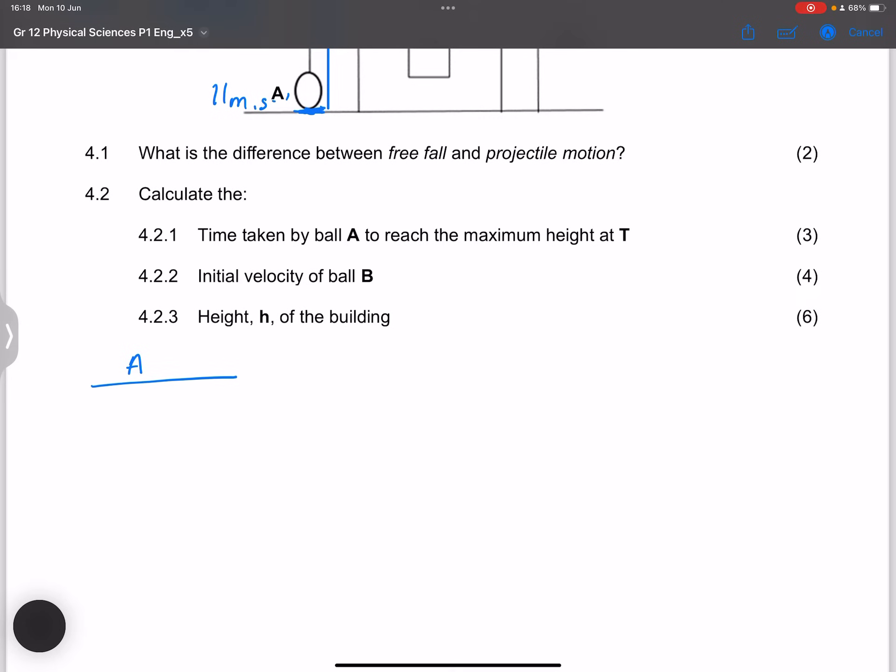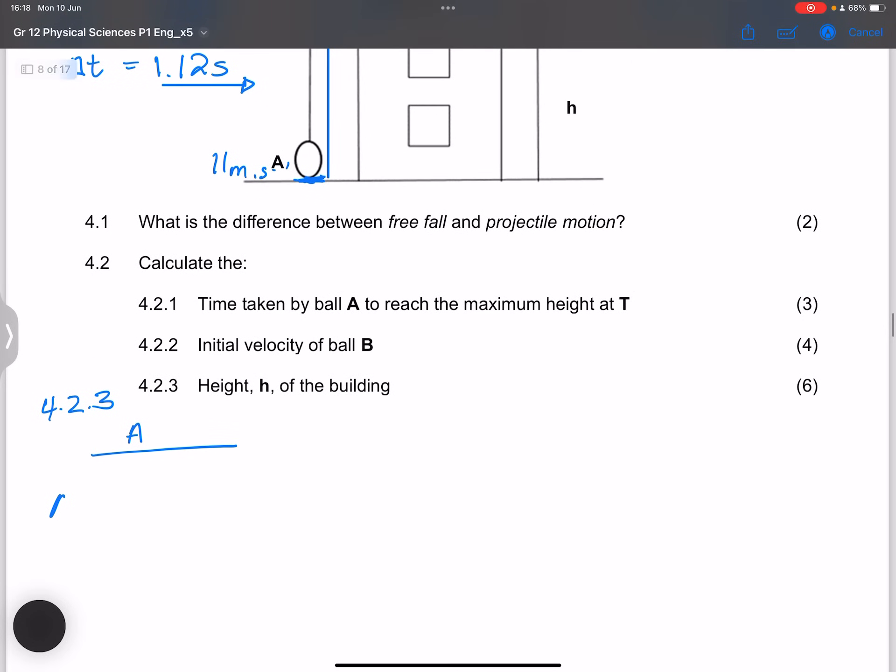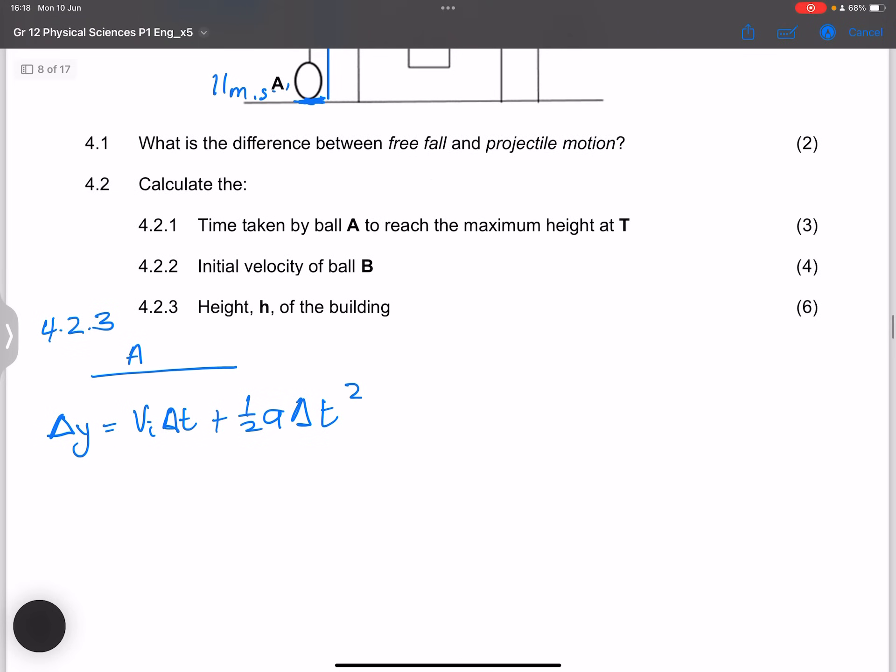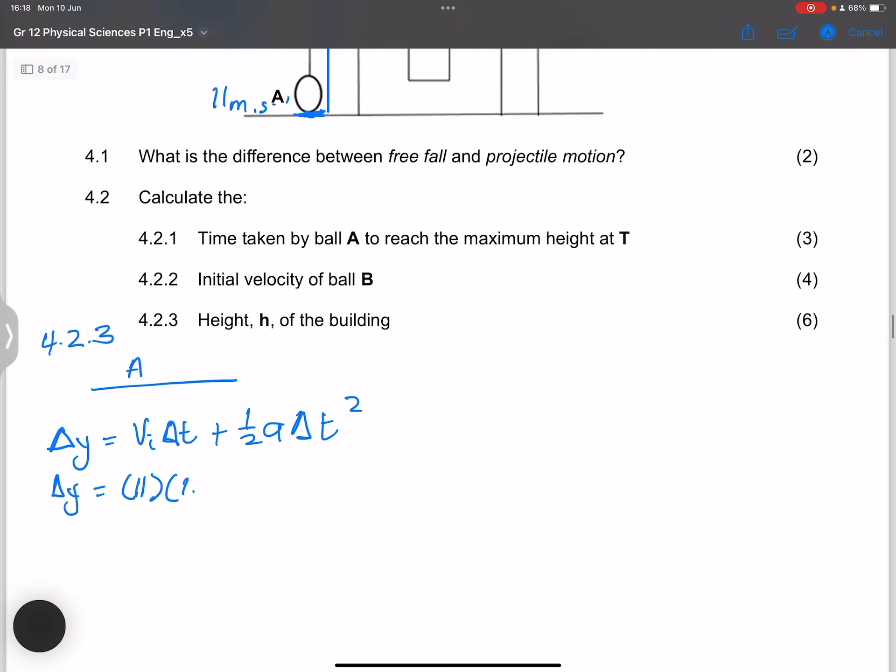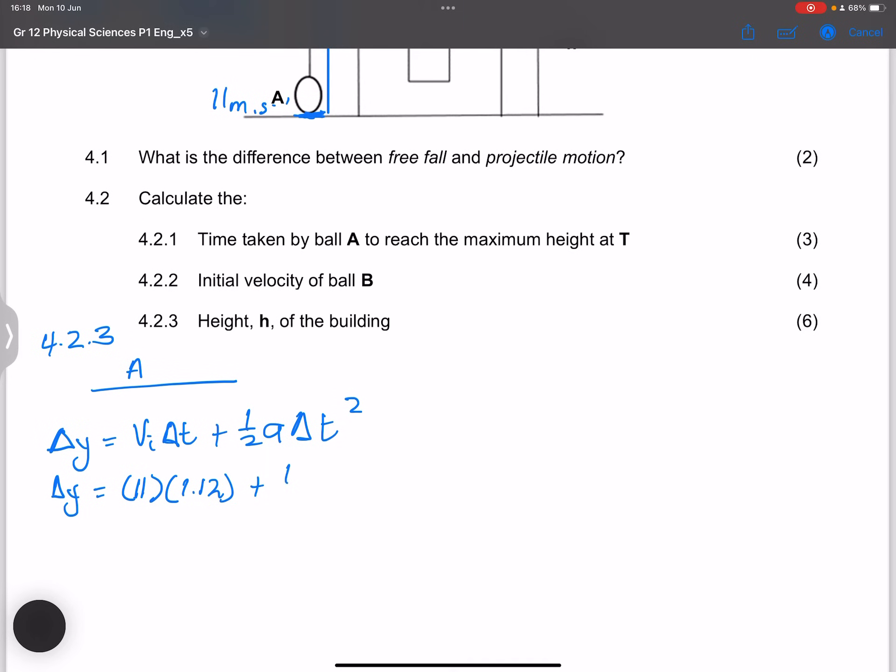For 4.2.3 I'm going to find, so we've got the initial velocity for ball A. So we can say delta Y is VI delta T plus 1 over 2 times A delta T squared. And nothing wrong if you decided to use delta Y VI plus VF divided by 2 delta T. So let's find that displacement. Our initial velocity is 11 meters per second. The time of flight we found that to be 1.12 plus a half times negative 9.8 times 1.12 squared.